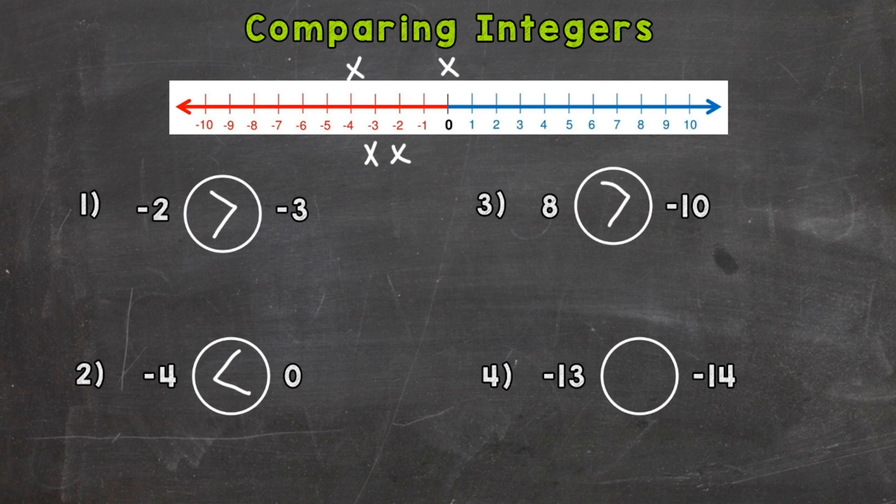And then lastly, number 4. Negative 13 compared to negative 14. Which is further to the right on the number line? Well, negative 13 would be. Or if we think temperature, which is greater? Negative 13 degrees is greater than negative 14.